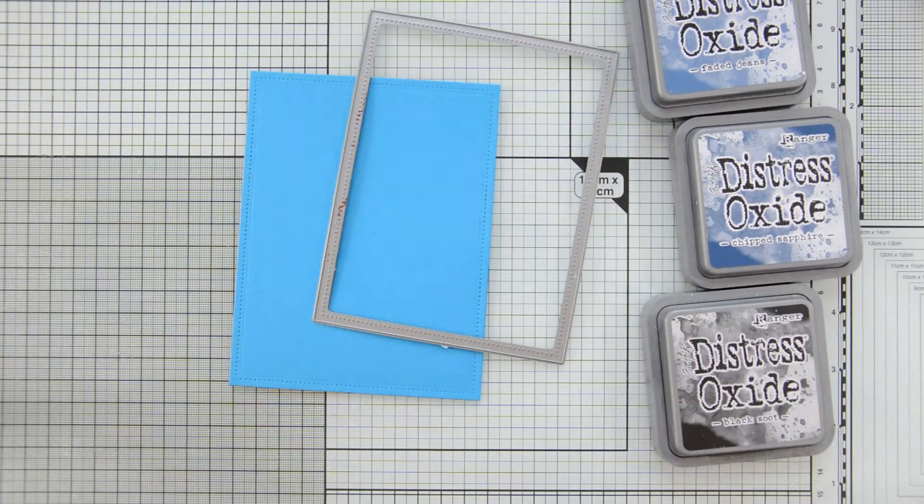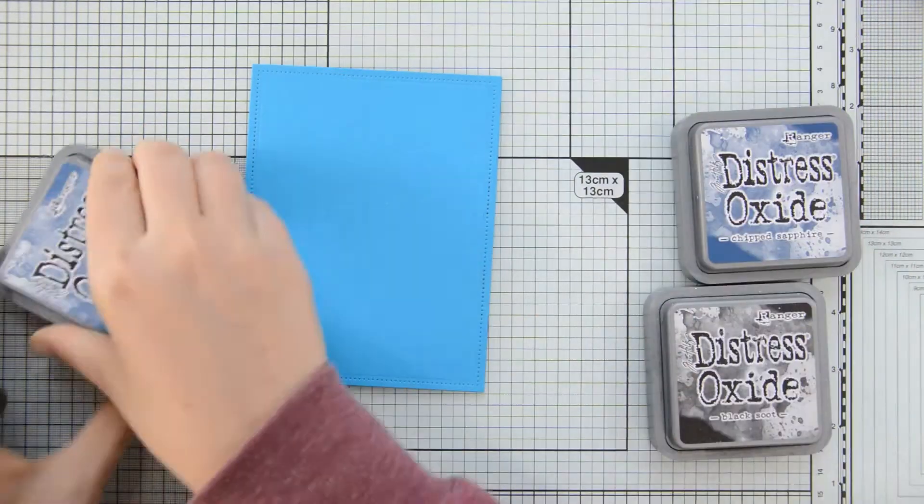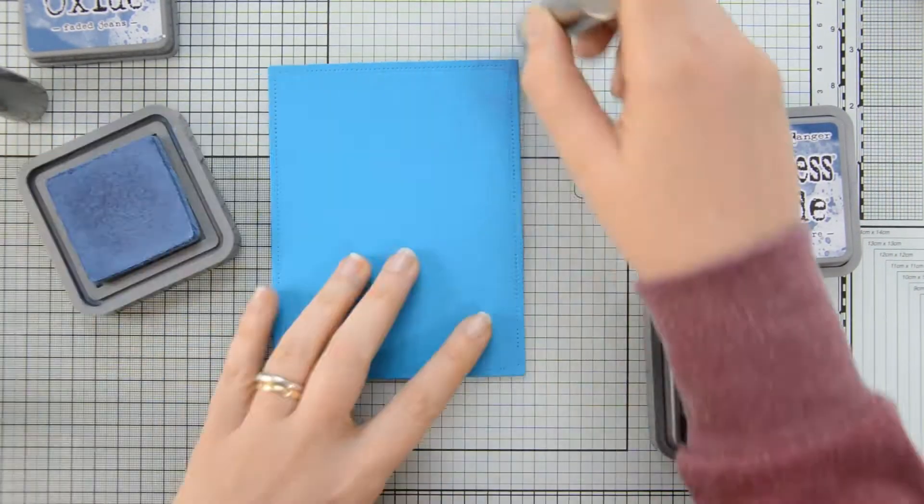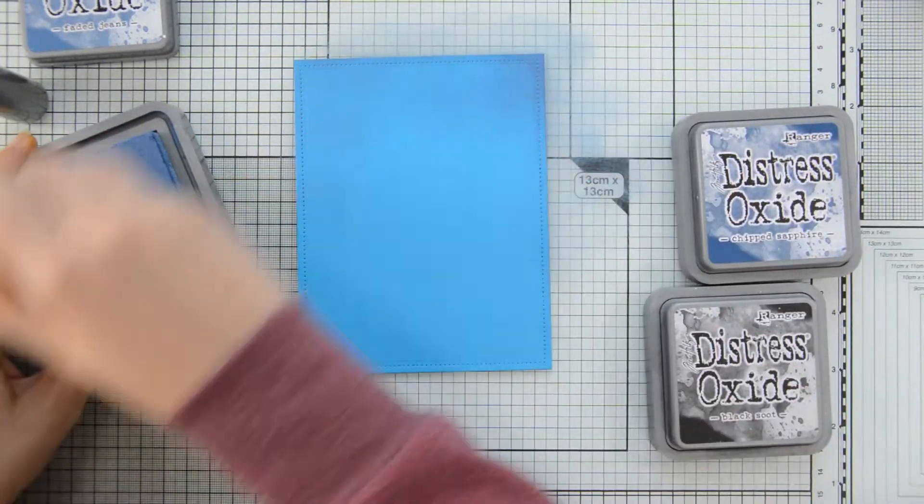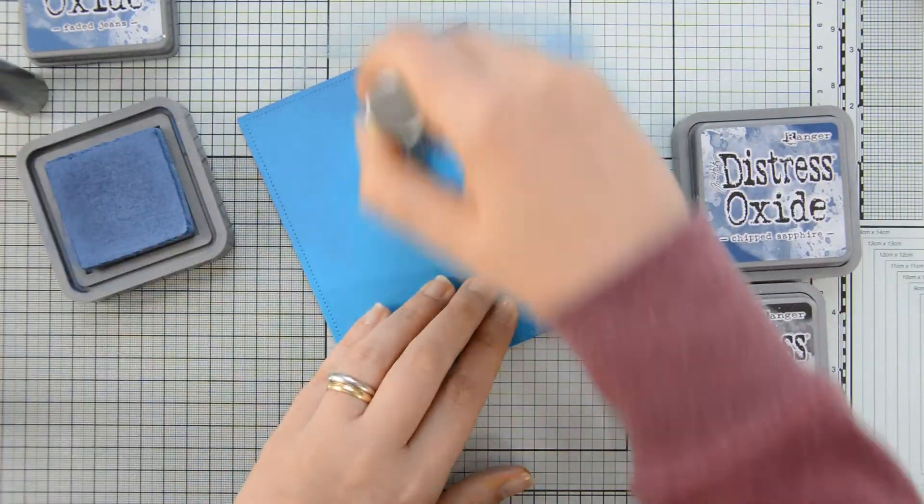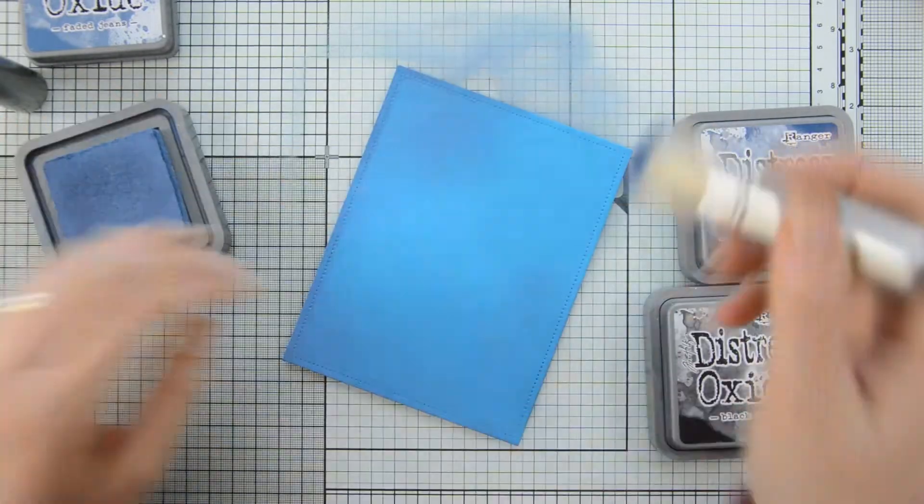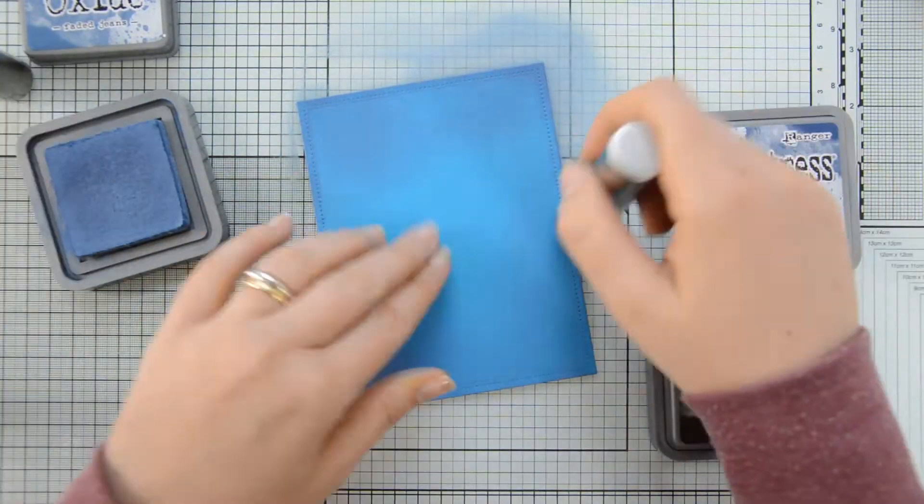For that, I die cut a piece of blue cardstock with the Darling Ribbon and Frames dies. And then I used my Distress Oxides in Faded Jeans, Chipped Sapphire and Black Suit to darken up the edges. I am using a blending brush by Ranger in order to apply my Distress Oxides to the panel and get a nice and soft transition.